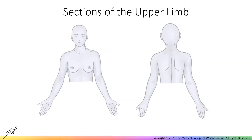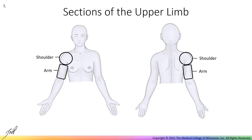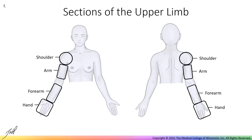The upper limb can be considered in several sections: the shoulder, arm, forearm, and hand. The elbow allows for movement between the arm and forearm, while the shoulder allows for movement between the thorax and upper limb. The focus of this video is on the arm. Note that the word root brachii refers to the humerus and is often included in terms associated with the humerus bone and thus structures in the region of the arm.